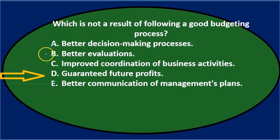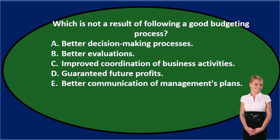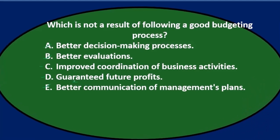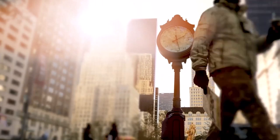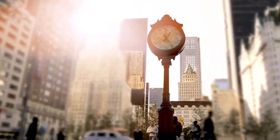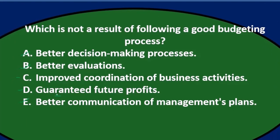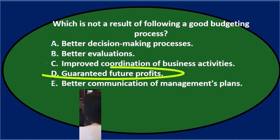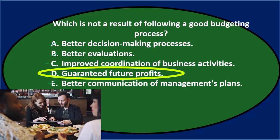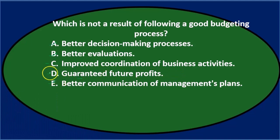You'll note that many of these options say 'better decisions,' 'better evaluations,' 'better this,' 'better that' — and then one item has the word 'guaranteed.' If you see any absolute word in an answer like 'this is always the case,' 'this is guaranteed to happen,' 'this never happens,' it only takes one exception for that entire statement to be incorrect. So be very careful with absolute words. Nothing guarantees future profits — anything after 'guaranteed' is pretty much going to disqualify that answer.